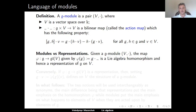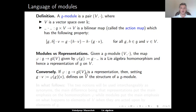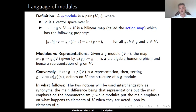Given any g-module v, we can consider the map φ from g to gl(v), defined so that the image of an element g in g is the linear transformation of v obtained by plugging g as the first argument in the action map. It is clear that this map φ is a homomorphism of Lie algebras and hence defines a representation of g on v. Conversely, if we have a representation given by a homomorphism φ from g to gl(v), then defining the action map as g · v = φ(g)(v) gives v the structure of a g-module.